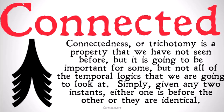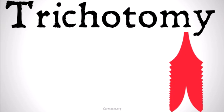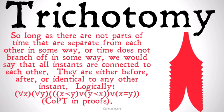Simply, what it means for some relation to have the property of being connected is that for any two things that relation relates, one either has the relation to the other, they have the relation in the opposite direction, or they are identical to each other. In terms of time, for any two instants, either one is before the other, the other is before the first, or they are identical. So long as there are no parts of time that are separate from each other, or time does not branch, we would say that all instants are connected to each other.